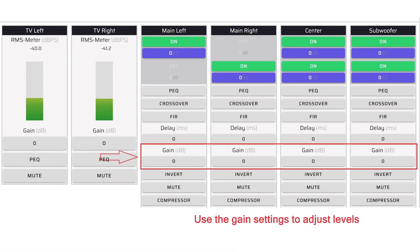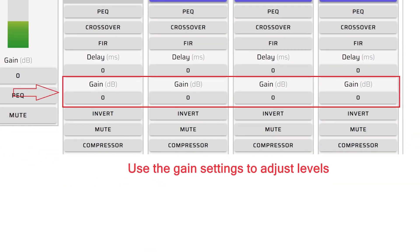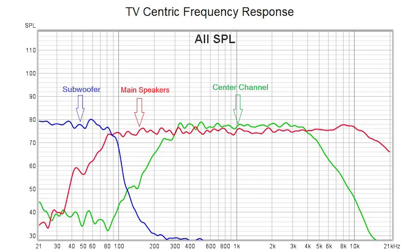The next step is to set the speaker and subwoofer level using REW and a Mini DSP UMIK. From the central listening area, adjust the levels to be close. More importantly, find the levels that provide the most enjoyable listening experience for you. In this example, we show a 3.1 setup with emphasis on the subwoofer and center channel levels. The most effective way to do this is to make adjustments for the best listening experience, then verify what you're hearing with REW measurements.